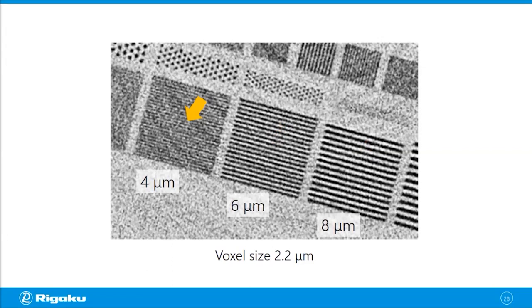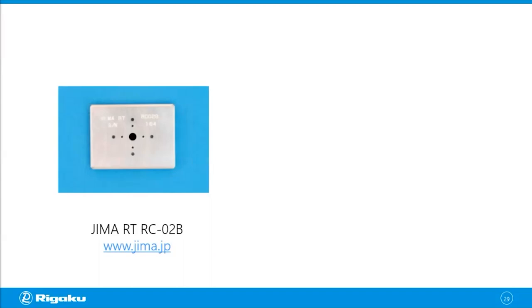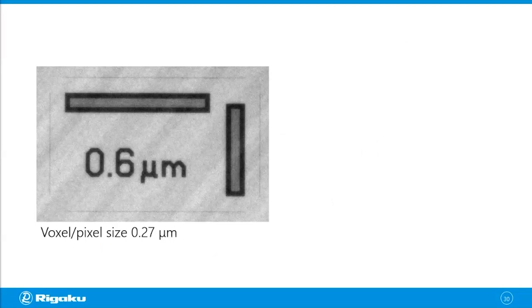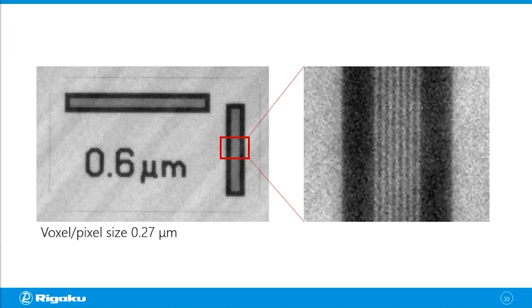For testing something less than 1 micron, you can use a resolution chart by GYMA. It is only for 2D measurement, but it has line pairs from 0.1 to 15 microns. In a 2D measurement example on 0.6 micron line pairs, collected at 0.27 micron voxel size, you can see the 0.6 micron lines are resolved — again, about double the voxel size — confirming that the resolution function size is comparable to the voxel size.